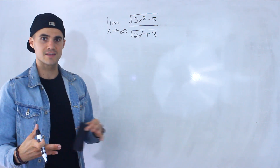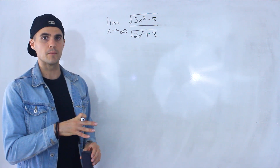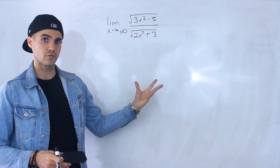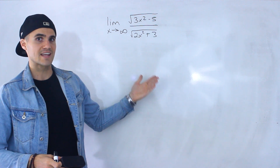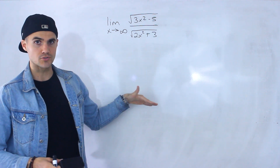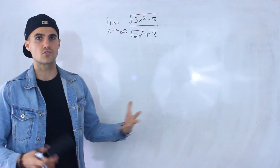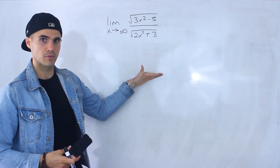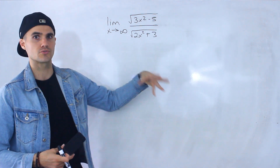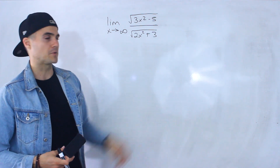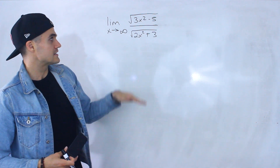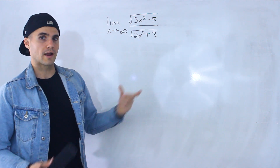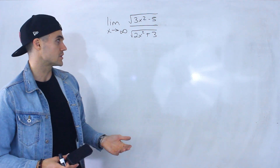Just to give a heads up, this is actually an example of a limit that's going to be in indeterminate form. However, it's an example where L'Hôpital's rule is actually not going to work. So far we've been covering limits where they're in indeterminate form and we can apply L'Hôpital's rule and get the actual limit. This is an example where we're going to have to use some other strategy.